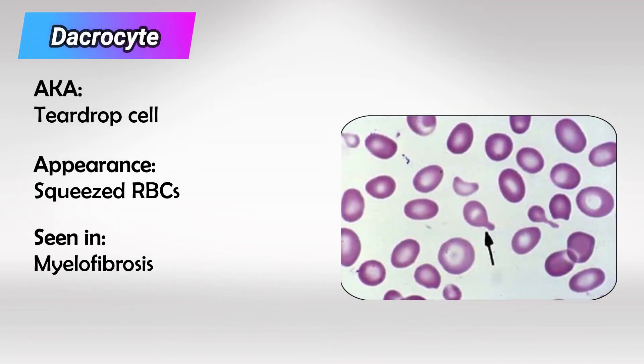Next we have dacrocytes, which means teardrop cells, and we see this in diseases that squeeze the RBCs out of the bone marrow.